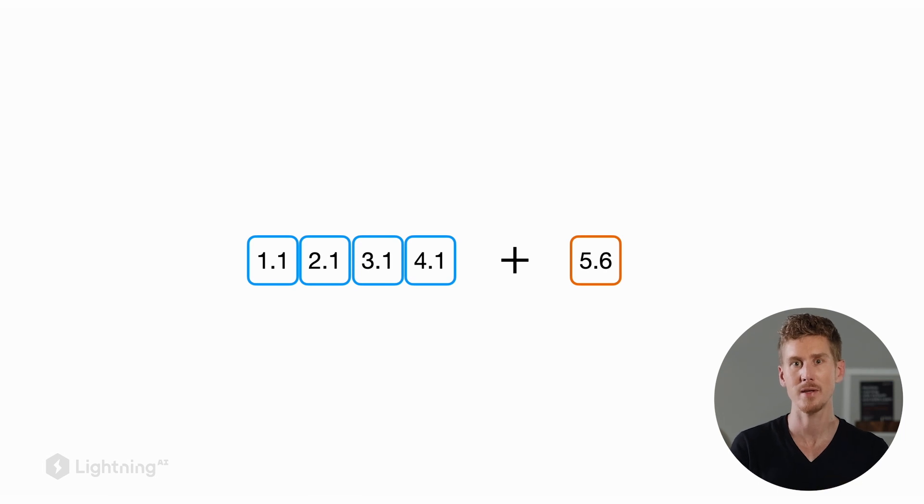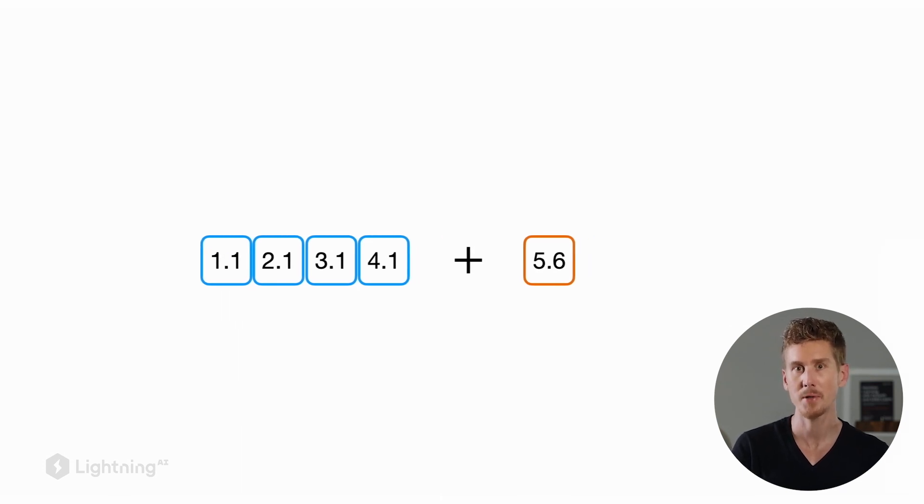However, tensor and array libraries have a concept called broadcasting where they create dimensions implicitly. What will happen if we implement this in PyTorch is that PyTorch will infer that we actually want to add a vector consisting of 5.6 to this previous vector. It will create these implicit dimensions that we use for the addition.